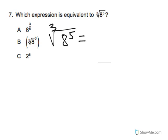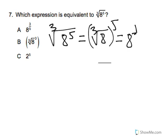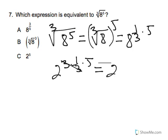This is 8 to the 1/3 times 5. But 8 is 2 to the 3rd power, so that's 2 to the 3rd times 1/3 times 5. The 1/3 cancels out, giving us 2 to the 5th power. So the answer is C.